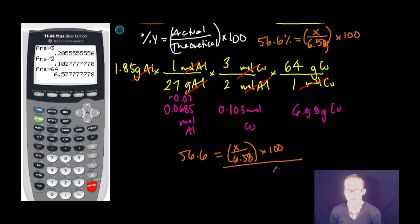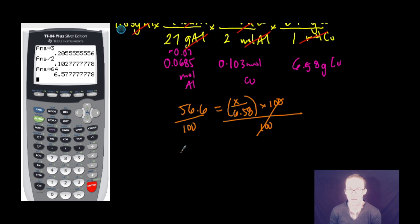I take my 56.6 equals x over 6.58 times 100. I divide each side by 100 to get rid of that 100. This becomes 0.566 equals x over 6.58.